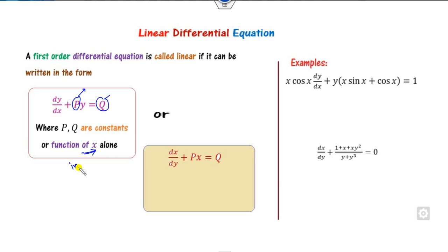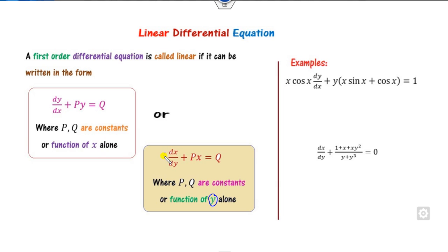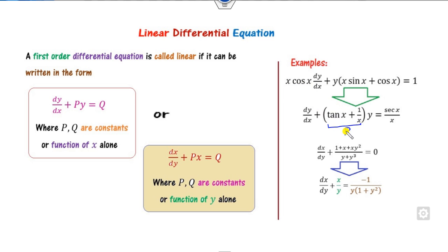You have to consider two constants p and q which must be functions of x only — they must not involve any value of y — and make sure the coefficient of dy/dx must be 1. Similarly for the other form, the independent variable is y, so p and q are functions of y only. Make sure the coefficient should be 1.